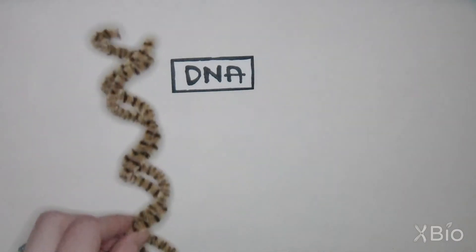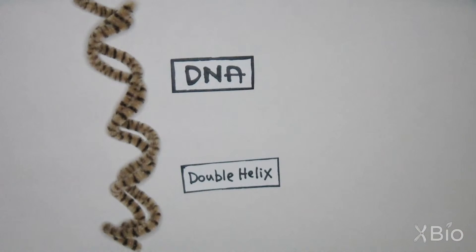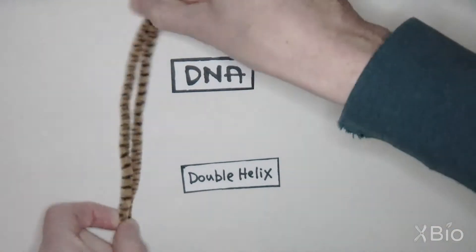DNA consists of two strands wrapped around each other to form a double helix, like a twisted ladder. Let's untwist it and take a closer look.